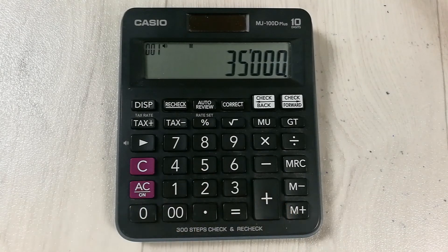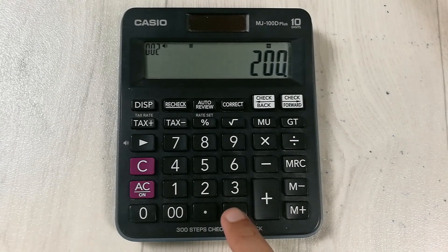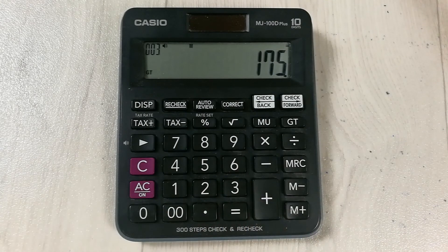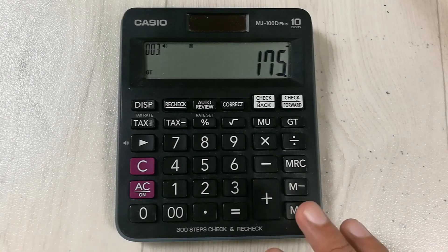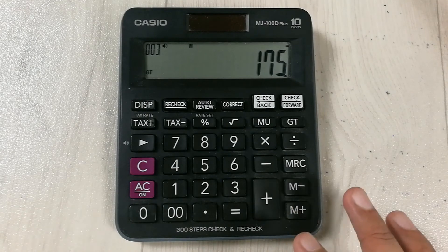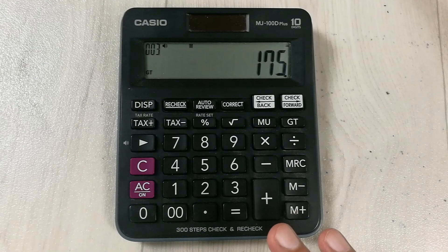We divide it with 200, then we press the equal button and here is our answer. So 175 is our average selling price. This is how you can calculate the average selling price.